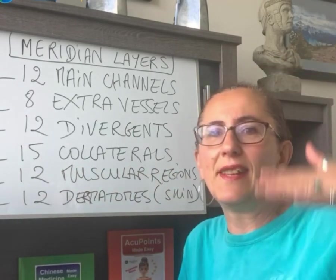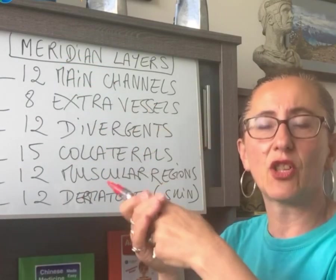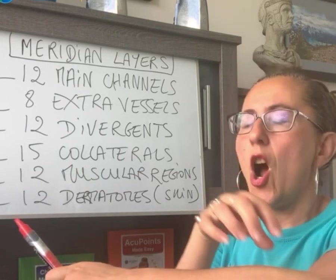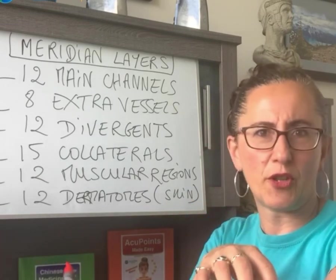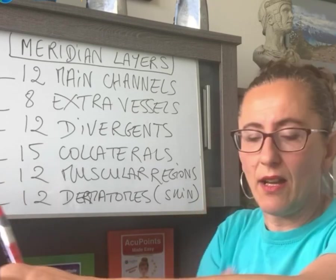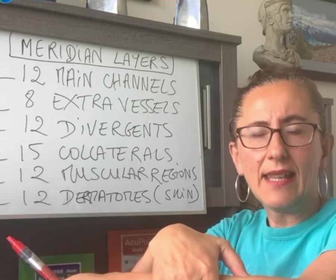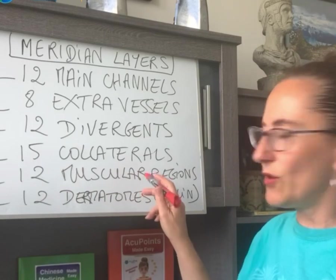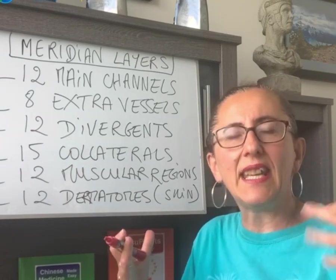The muscular regions are the layers a little bit below, corresponding to the same areas. For example, the extensors of the forearm — which allow your hand to extend — are the muscular region of the large intestine because that's the area of that meridian. Points like LI 8, 9, 10 are really good for the extensors with carpal tunnel syndrome or forearm pain. So if you press around your extensors and find tenderness, that tells us to look at what's going on with the large intestine. The 12 muscular regions are more superficial than the main meridians but not as much as the dermatomes, and they correspond to the 12 main meridians to give us diagnostic clues.